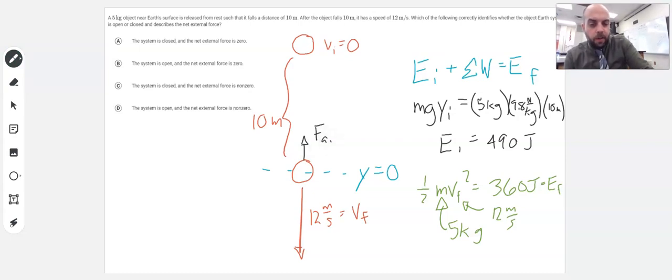doing negative work on this system as it falls this amount, because this system is open and the net external force is non-zero. That's the only way that we could get a total energy at the end that's different than the total energy at the beginning.